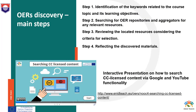There are four easy steps any instructor can take when looking for open content. Step 1: identification of keywords related to the course topic and its learning objectives. Step 2: searching OER repositories and aggregators for any relevant resources. Step 3: reviewing the located resources considering the criteria for selection. Step 4: reflecting on the discovered materials. The discovery of relevant CC licensed open educational resources could be done via Google's advanced search options or via featured search in YouTube. Please access the interactive presentation 'Searching CC Licensed Content' to make use of these methods via the link presented on the screen, or find the resource in the collection of OER published on the EDIT project website.